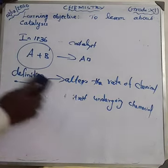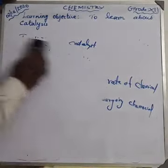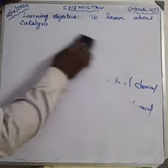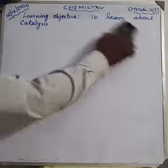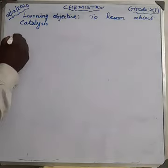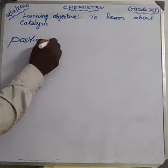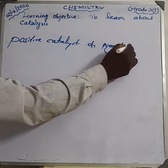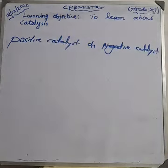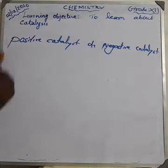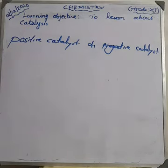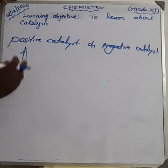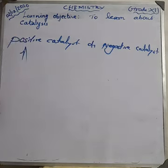The catalyst can be classified into many types. First, we learn about positive catalyst and negative catalyst. The positive catalyst: whenever we add one substance and the rate of the reaction increases in the presence of that catalyst, we call it a positive catalyst.